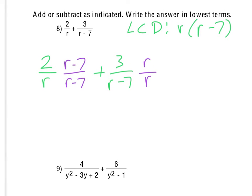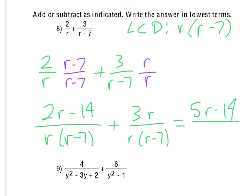In this case, we multiply the 2 by the r minus 7. We get 2r minus 14. And that goes over the LCD r times r minus 7. And then just the 3r over here, and then again the LCD r times r minus 7. We can then add the numerators together. So we get 5r minus 14 over the LCD r times r minus 7.